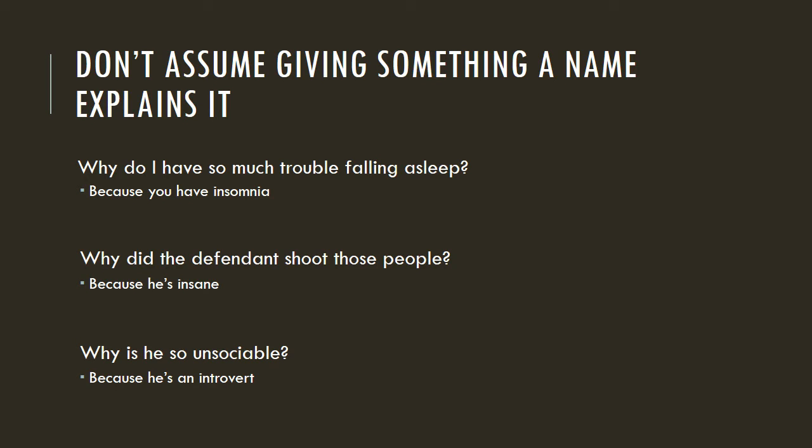Keep calm and don't fool yourself — being able to think clearly and without bias is the basis for critical thinking. Here are some decision making and problem solving pitfalls to look out for; avoiding them will help improve your critical thinking greatly. Don't assume that giving something a name explains it. For example: why do I have so much trouble falling asleep? Because you have insomnia. No — just labeling it doesn't explain it.